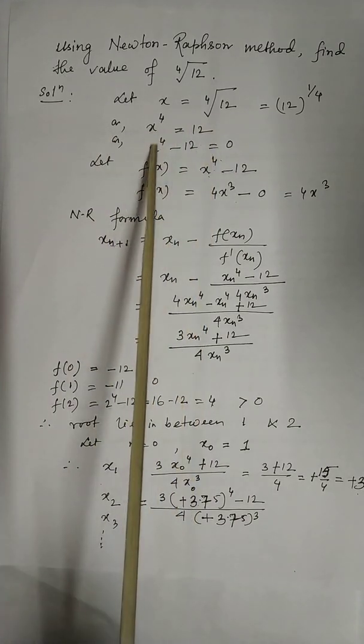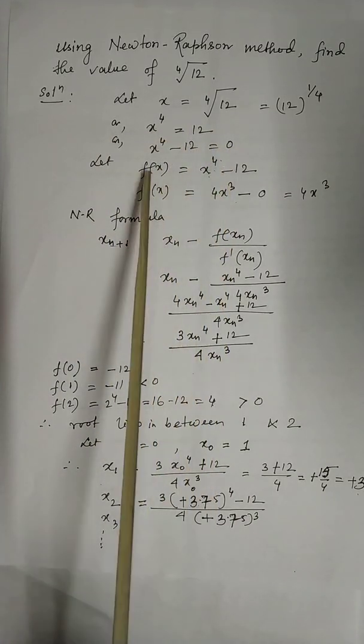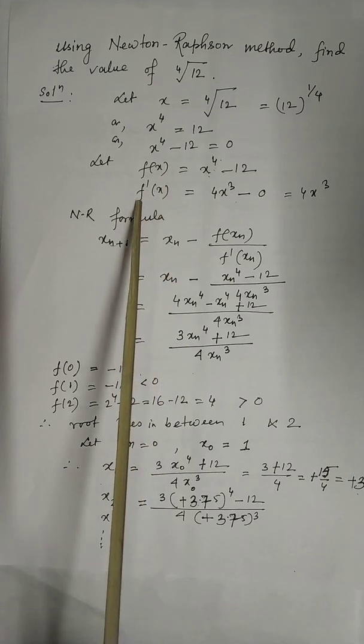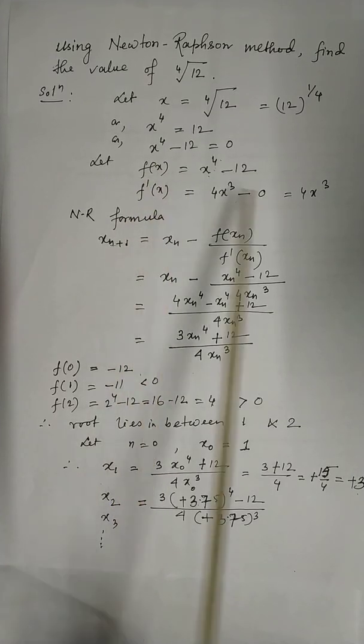Then x to the power 4 is 12. x to the power 4 minus 12 equals 0. This is the function f(x). Find the derivative of f(x), that is f'(x) equals 4x³.